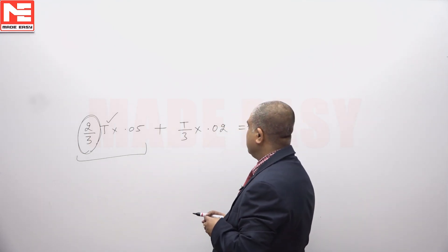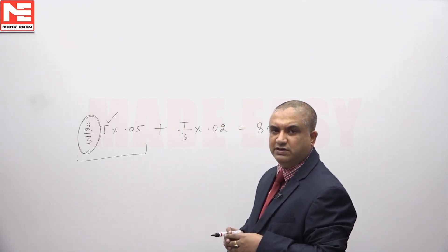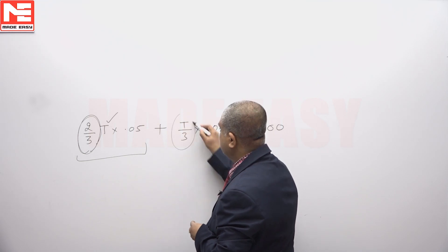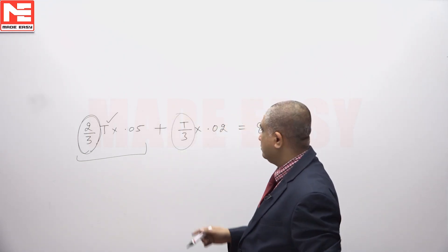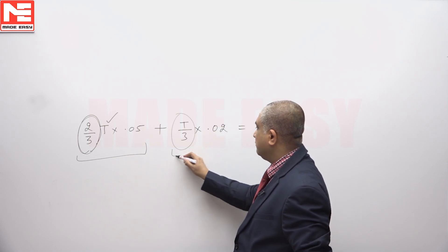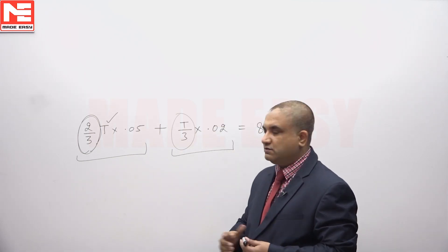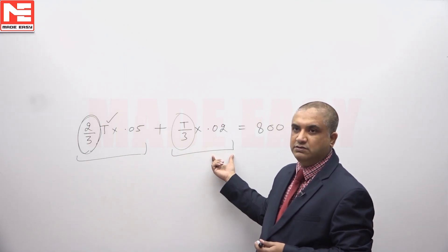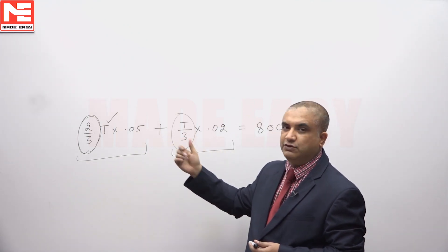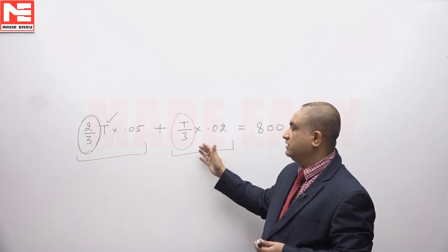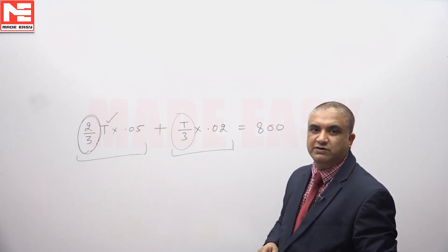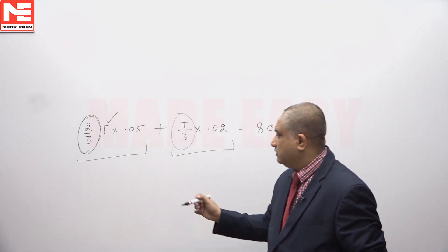One-third was sold at a profit of 2 percent only — 2 upon 100, which is equal to 0.02. So one-third of T, that means T by 3, is sold at a profit of 2 percent. Two-thirds yields a profit of 5 percent and one-third yields a profit of 2 percent; total profit is 800. This is a simple problem of linear equation in one variable.